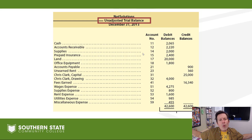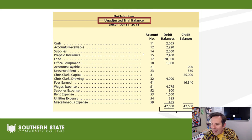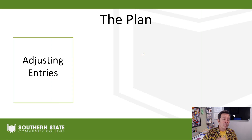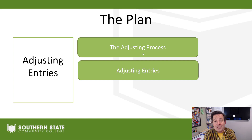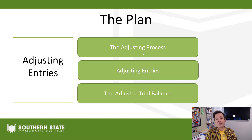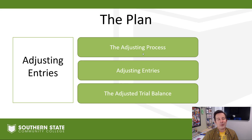But that was an unadjusted trial balance, and that 'un' part should give you a hint that there's something left that needs to be done. You might say, 'Hold on a second, Professor Martin — we did all this good accounting, you told me everything we done was right. Why in the heck is there more to do?' Well, that's what I'm going to explain to you right now. Our plan: understanding adjusting entries — we need to understand the process, why we do it, the entries that we make, and the adjusted trial balance.